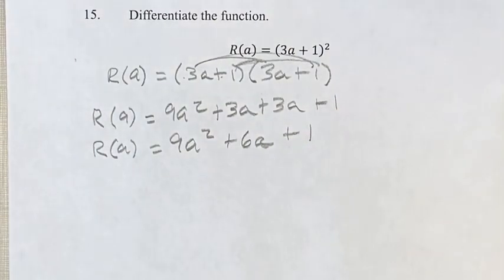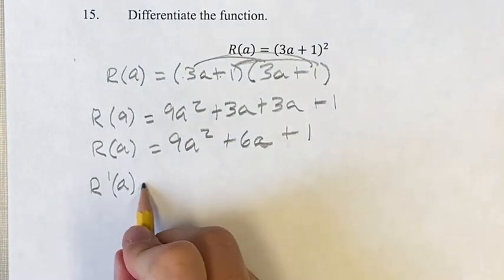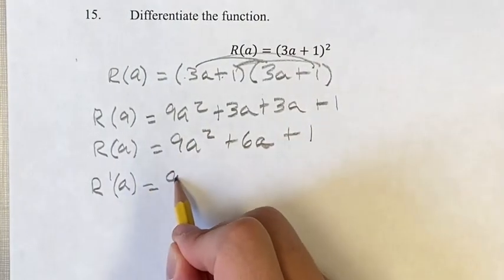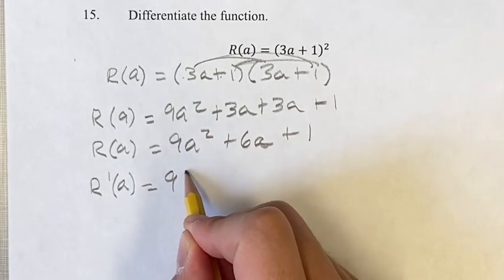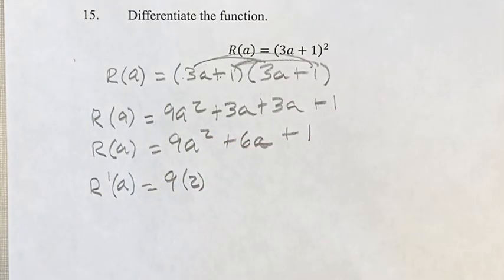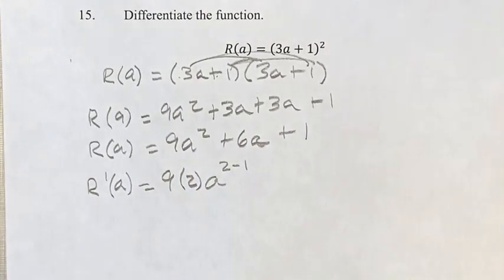Now, this is going to be easier to find the derivative of. The derivative, R'(a), is equal to - for this first term, we take the exponent and bring it down to multiply the coefficient, so we have 9 times 2, then our new exponent is going to be 2 minus 1.